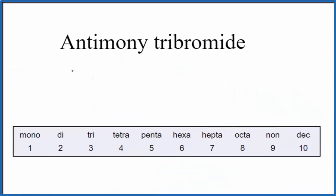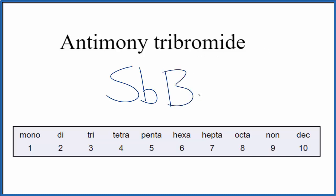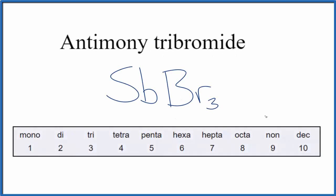On the periodic table, antimony is Sb and bromide from bromine is Br. We see we have the prefix 'tri' here — tri means three, like a tricycle — so we'll put a three right here. The formula for antimony tribromide is SbBr₃.